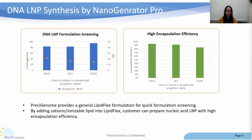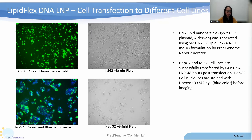Next, we used Nanogenerator Pro to synthesize DNA lipid nanoparticles, using GFP DNA plasmid as a payload sample. The size of the DNA lipid nanoparticles synthesized by Pro is between 80 to 100 nanometers, dependent on lipid formulations. The PDI values and encapsulation efficiency are excellent — over 90% of the DNA molecules are successfully encapsulated inside the LNP. We then used the DNA lipid nanoparticles for in vitro cell transfection studies. Both K562 and HepG2 human cell lines were successfully transfected and expressed GFP after 48 hours post-transfection.